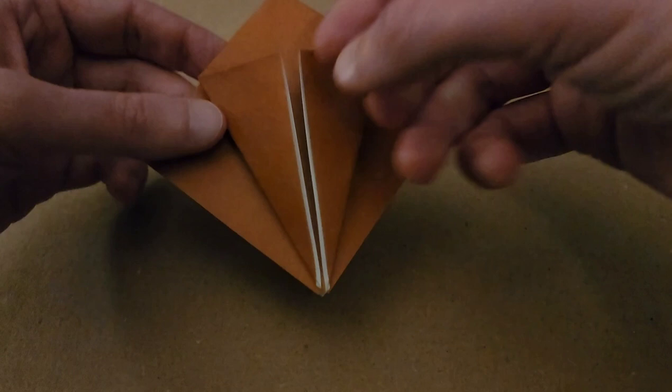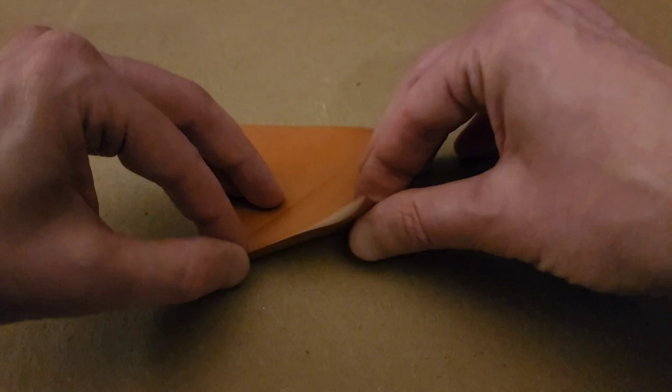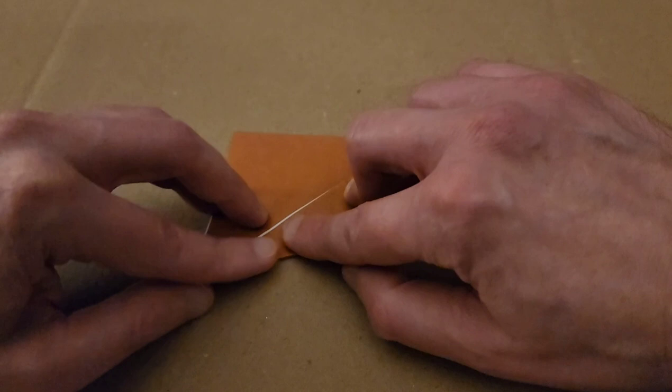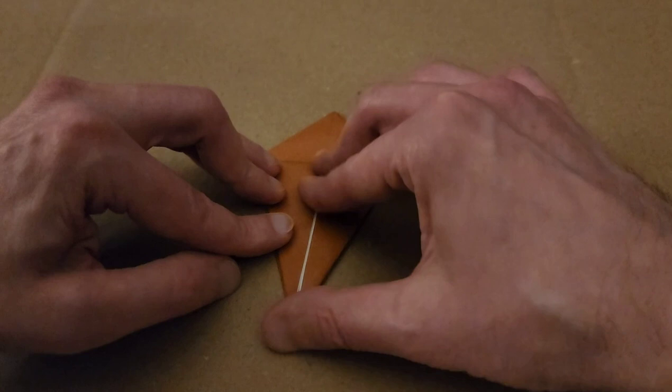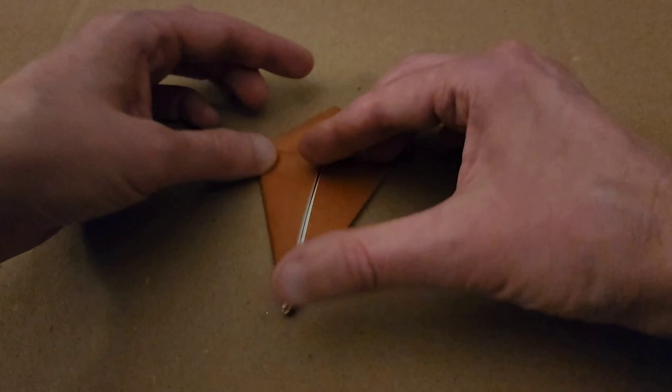There we go. So we have the kite fold. Then turn it over, and do the exact same thing with your remaining two sides. So, side to the middle for the kite fold. And then side to the middle for the kite fold. There we go.